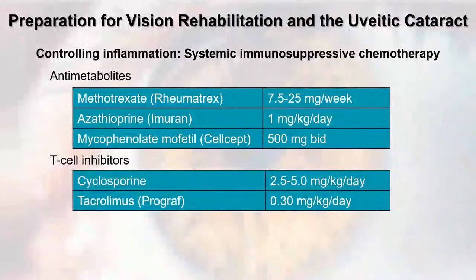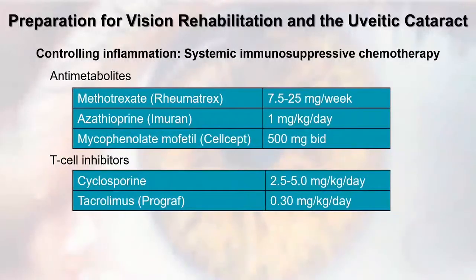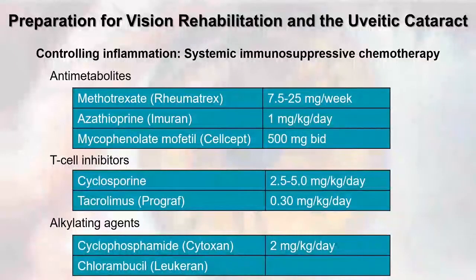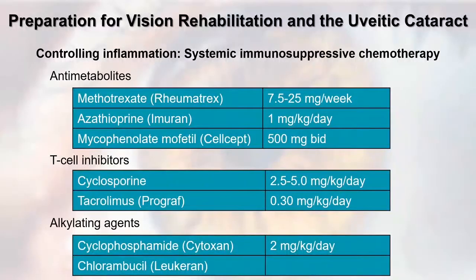T-cell inhibitors are used less often to control inflammation but more to improve prognosis of transplant patients. Other medications with more side effects — like cytoxan (cyclophosphamide) — need to be used very responsibly and are specifically helpful in difficult cases of pemphigoid or necrotizing scleritis.